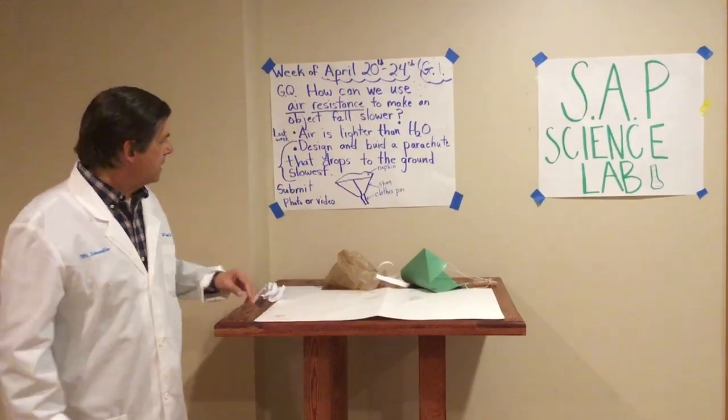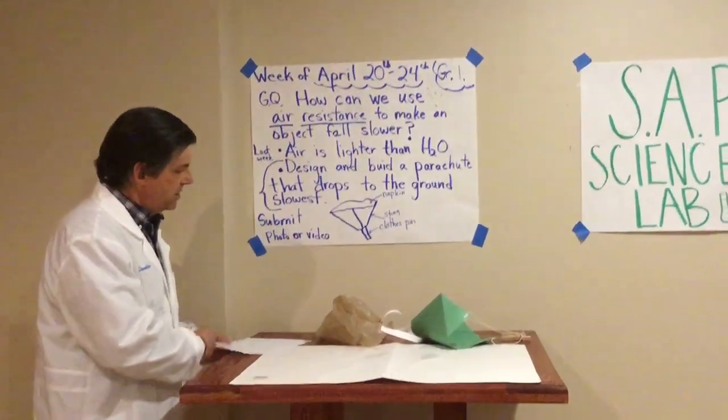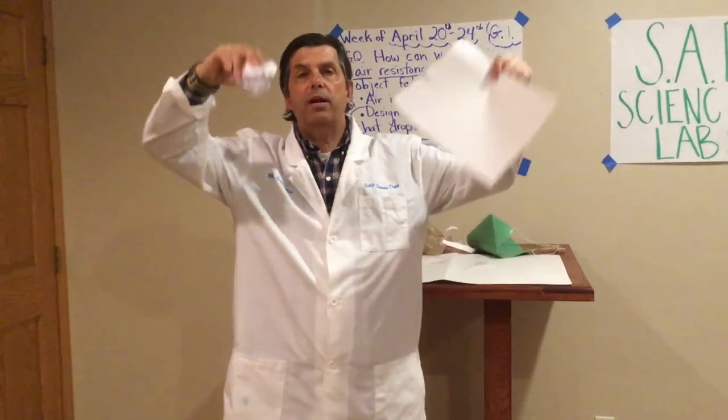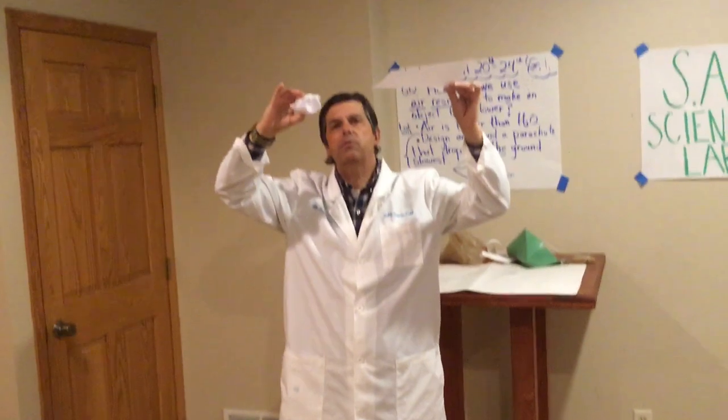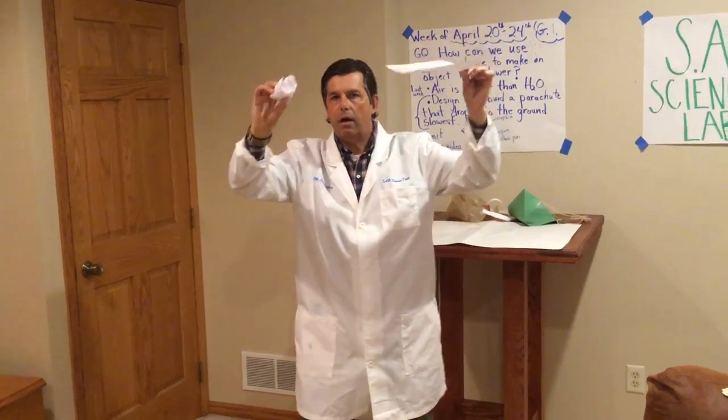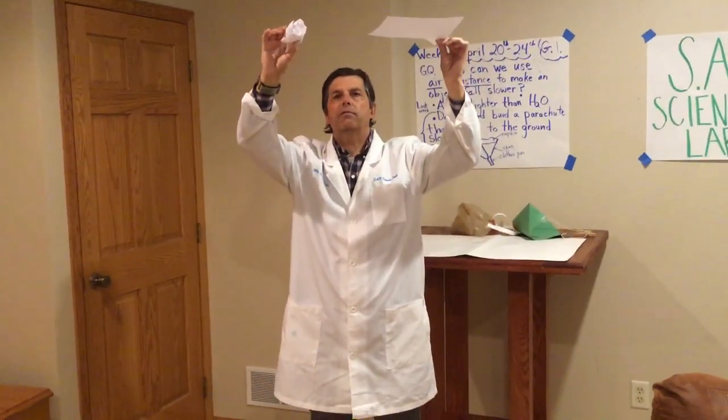To start out, I'm just going to do a quick little demonstration. I have two pieces of paper that are the same size, but I crumpled one into a different shape than the other. When I drop them from the same height at the same time, I want you to predict which one you think is going to hit the ground first — the crumpled one or the one that is not crumpled. Think about it, make your prediction. All right, I'm going to drop them. Let's see which one hits the ground first.